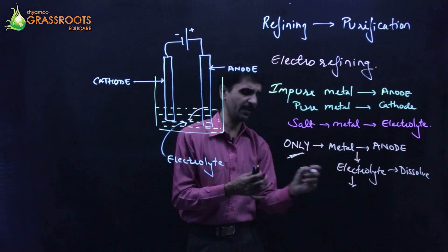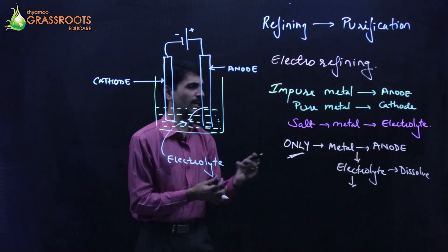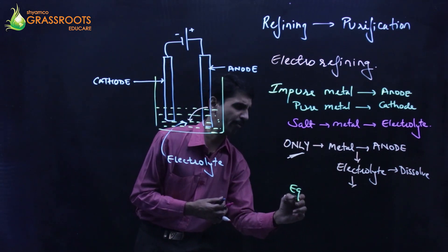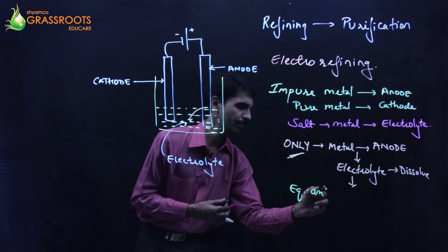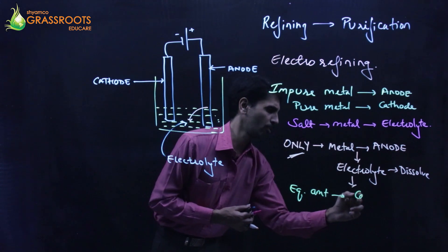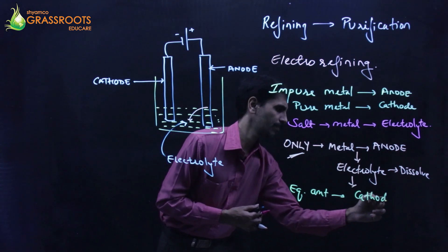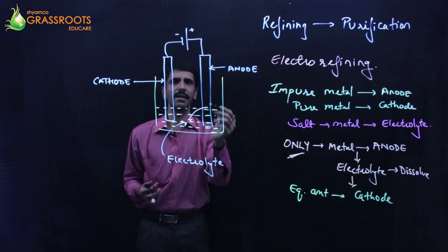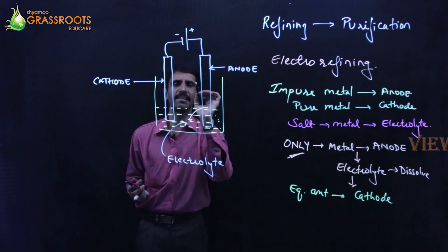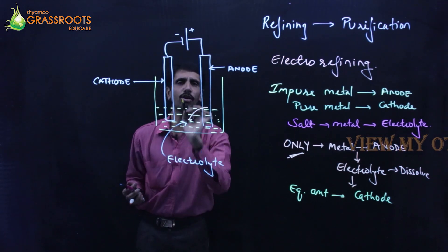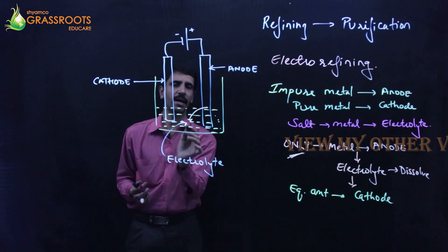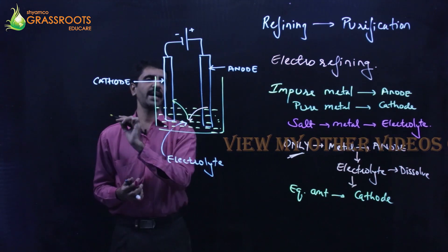And then what happens is equivalent amount of that gets deposited at the cathode. Jitna bhi dissolve hua hai electrolyte mein exactly utanai amount cathode mein chakar wo deposit ho chayega. So it goes like this and it gets deposited.